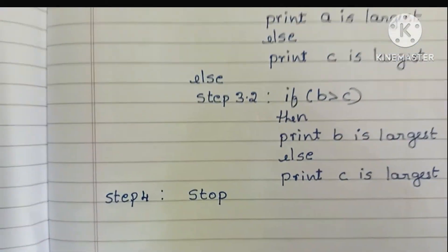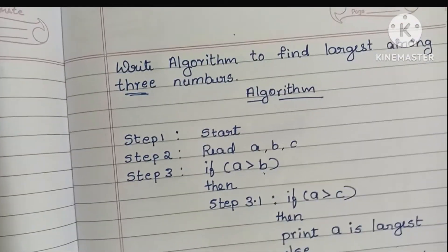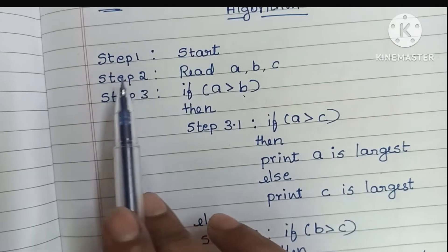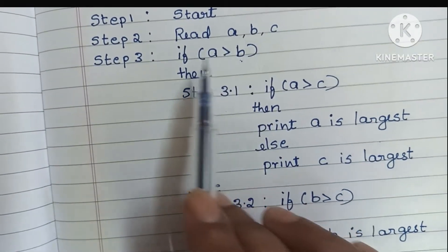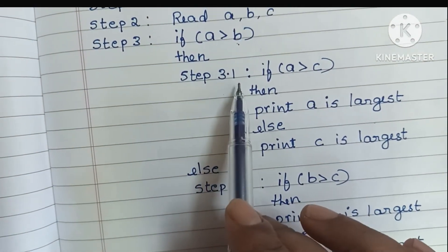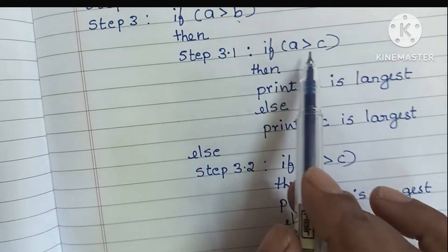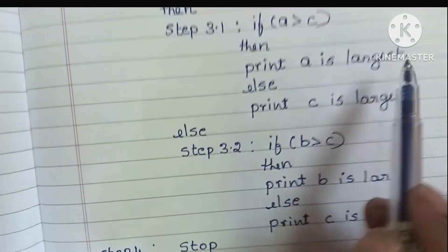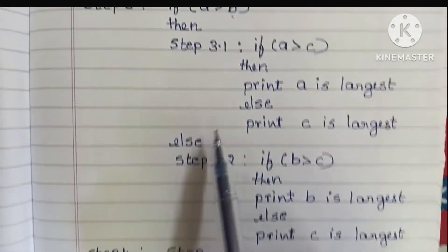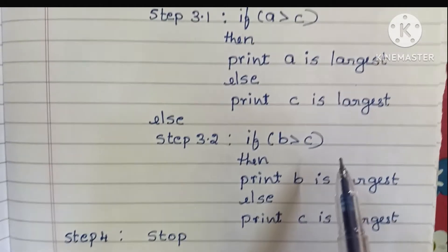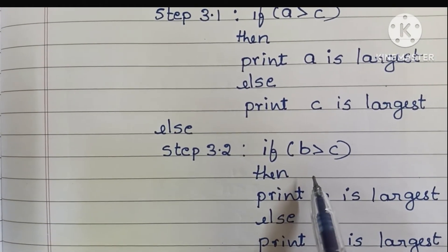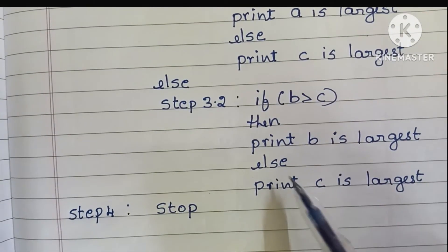So to summarize: the algorithm starts with the start statement. In step 2, we read three variables a, b, and c. In step 3, we check a with b — if a greater than b, we execute step 3.1 and check a with c. If a greater than c is true, print a is largest; else print c is largest. If a greater than b is false, we execute step 3.2 — if b greater than c is true, print b is largest; else print c is largest. Finally, step 4: stop the algorithm using the stop statement.